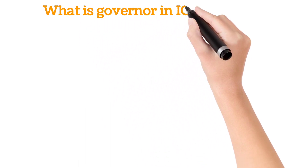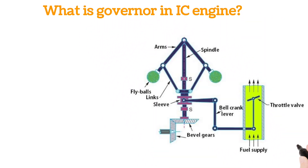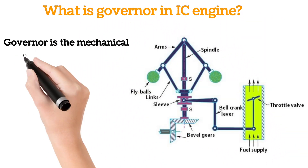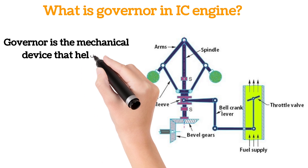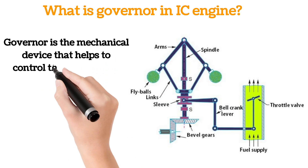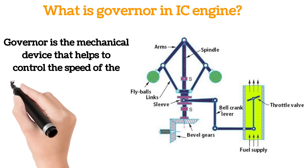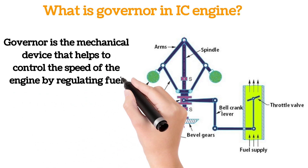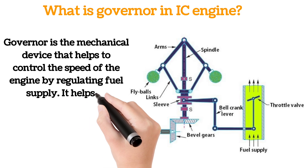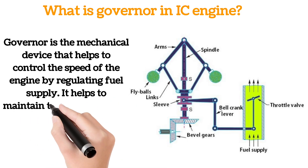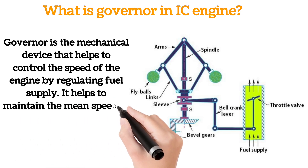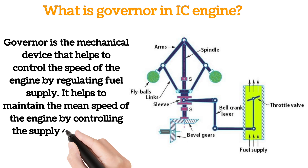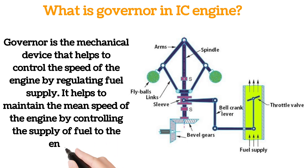What is a governor in an IC engine? A governor is a mechanical device that helps to control the speed of the engine by regulating fuel supply. It helps to maintain the mean speed of the engine by controlling the supply of fuel to the engine.